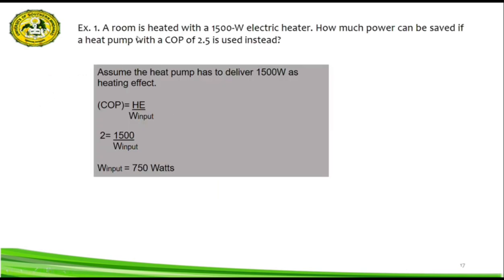For better understanding, let's solve problems regarding the second law of thermodynamics. Example number one: a room is heated with a 1500-watt electric heater. How much power can be saved if a heat pump with a COP of 2.5 is used instead?